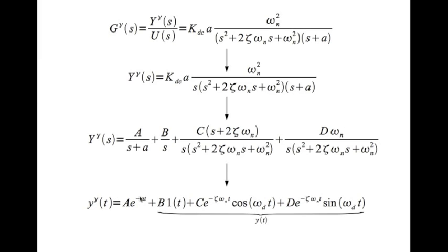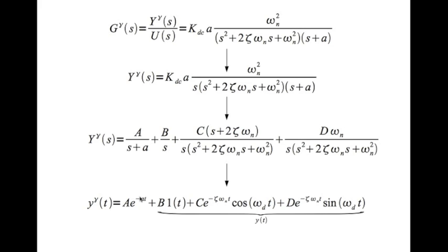Now let's look at what happens when we place the pole at various locations. Here we have the original system in black, system SYS. Now I have put poles at three different locations: at minus 1, minus 4, and minus 10. That corresponds to system 1, system 2, and system 3. So what is system 1?